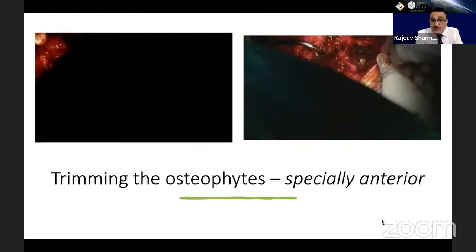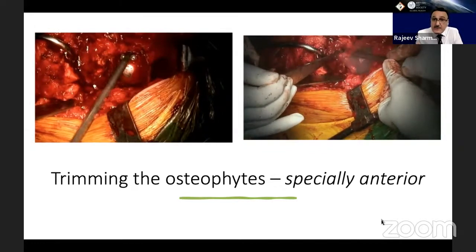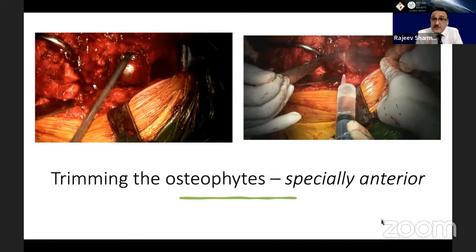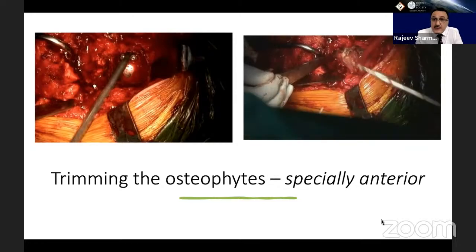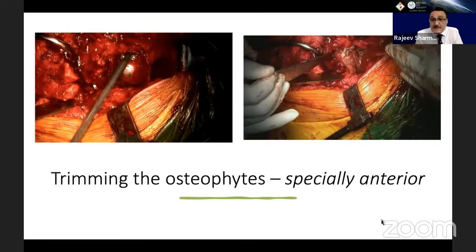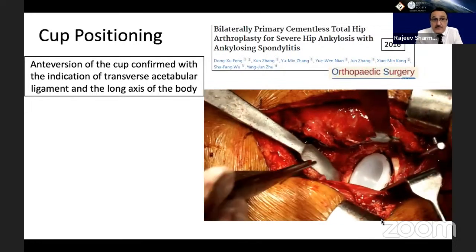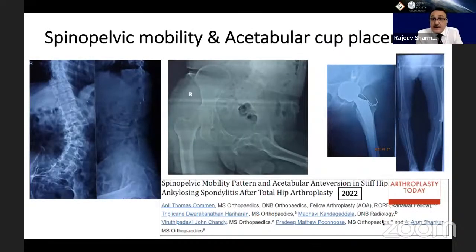Trimming of osteophytes is important, especially the anterior osteophytes. Using a high-speed burr is a very useful technique — keep saline over it to avoid heat injury, then use curved osteotomes to remove the osteophytes. In ankylosing spondylitis cases there can be huge large osteophytes which need to be removed. Use a nibbler for excess osteophytes; posterior osteophytes can be left in place if needed. Anteversion of the cup is confirmed with the transverse acetabular ligament. The spinopelvic mobility and acetabular cup placement will be discussed further by Vijay and Adarsh.